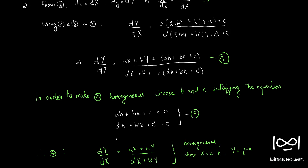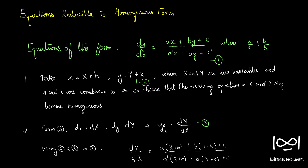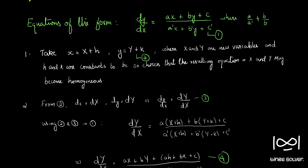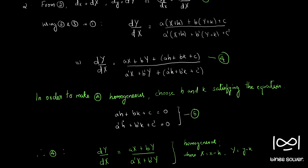If you remember, we said at the beginning that to solve this question using this method, a/a' should not equal b/b'. If a/a' were equal to b/b', these two equations become identical — the second equation becomes a multiple of the first — and we would not be able to solve for h and k. That is the reason why this method fails if a/a' equals b/b'.